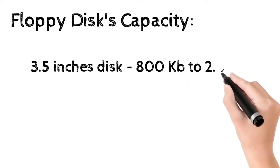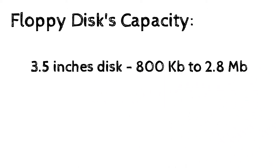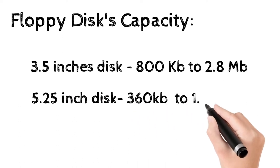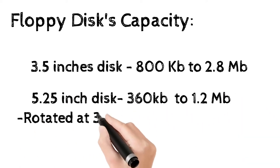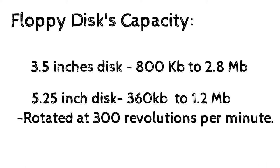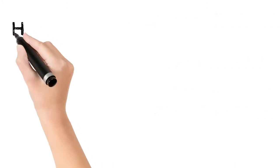The disk is rotated normally at 300 revolutions per minute. Floppy disks come with various capacities: a 3.5-inch disk holds a capacity of 800 KB to 2.8 MB, and a 5.25-inch disk holds a capacity of 360 KB to 1.2 MB.